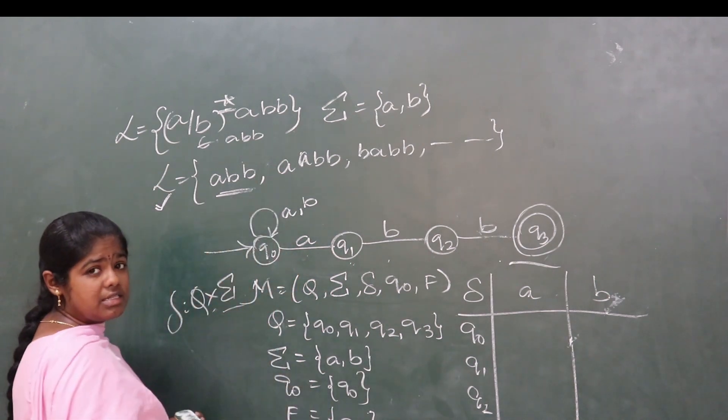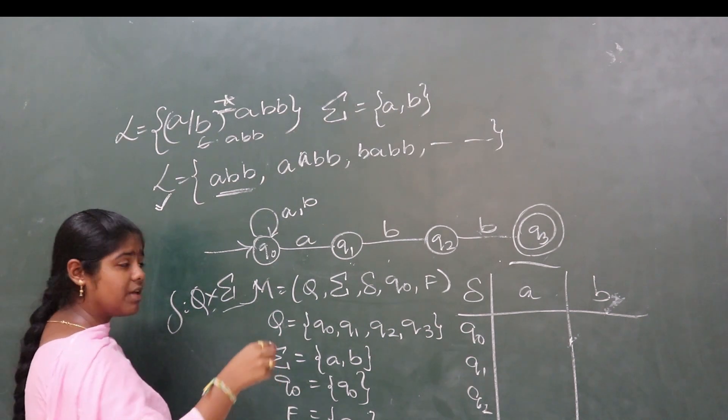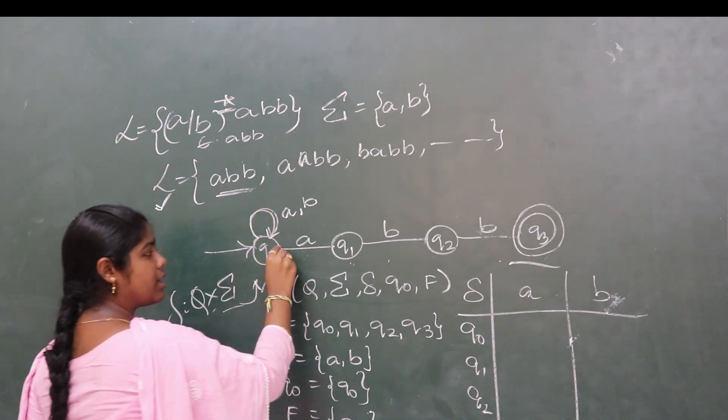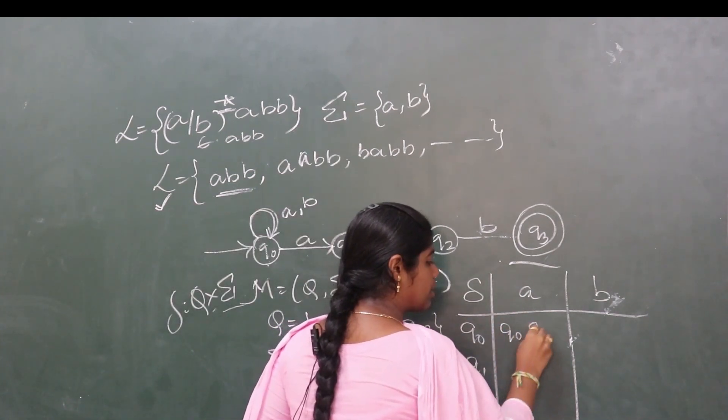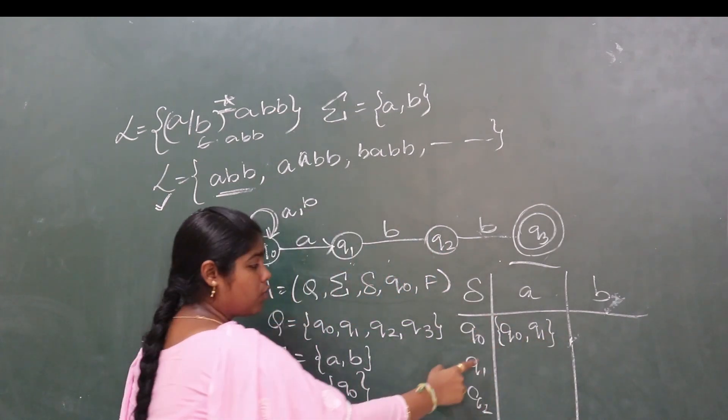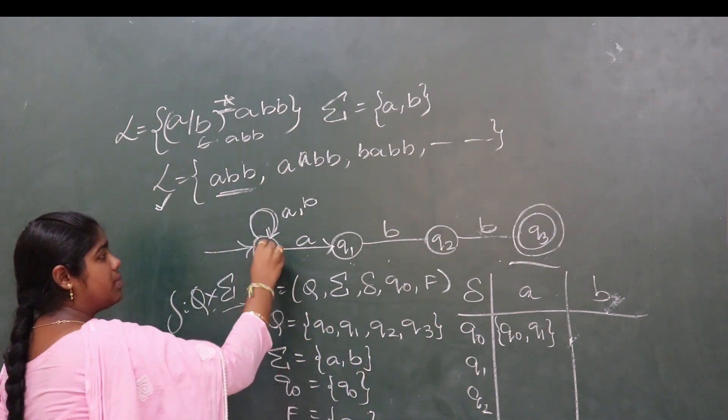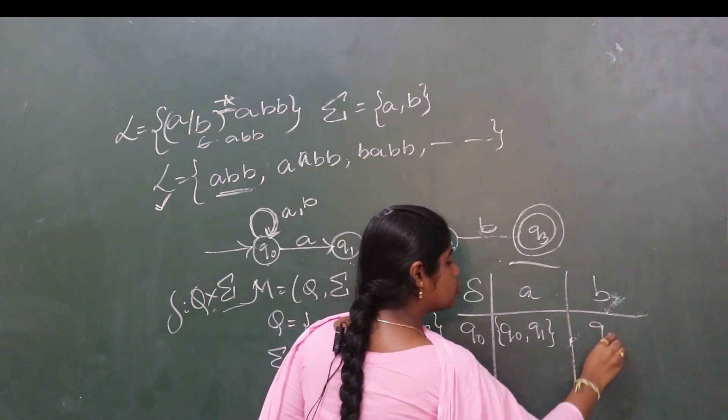Consider the transitions: Q0 on a goes to both Q0 and Q1, so it is {Q0, Q1}. More than one state is available. Q0 on b goes to Q0.